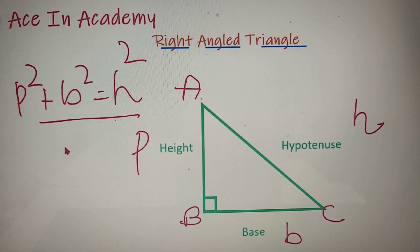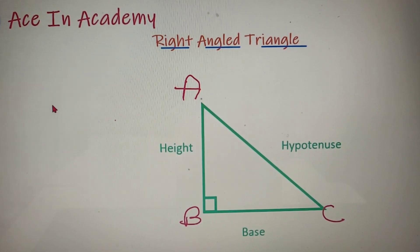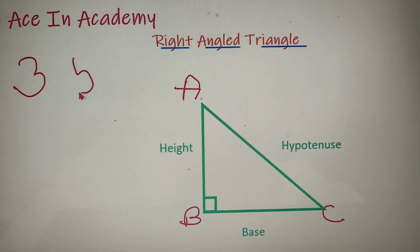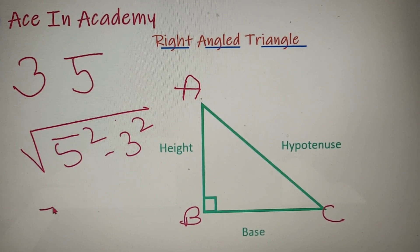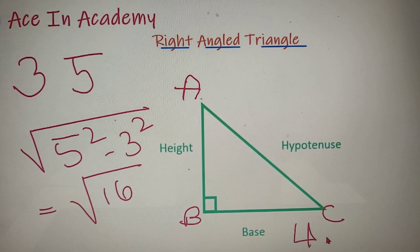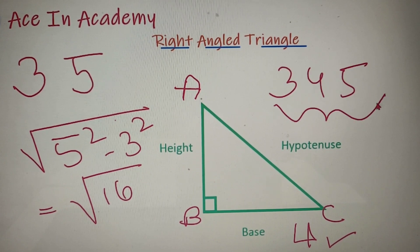I have made a separate video on the Pythagorean theorem covering all basic properties including its proof, and the link is in the description. Given any two sides of a right-angled triangle, you can calculate the third using the theorem. For example, if the height is 3 and the hypotenuse is 5, the base equals the square root of (5² minus 3²) = square root of 16 = 4. Collectively, 3, 4, and 5 are called Pythagorean triplets, and there are infinitely many such triplets.